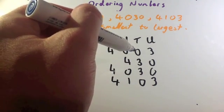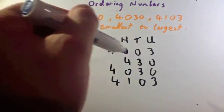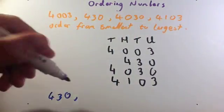Next, let's look at the tens. The one at the top's got a zero, the other one's got a three. So, therefore, the one on the top, 4,003, must be the next smallest number.